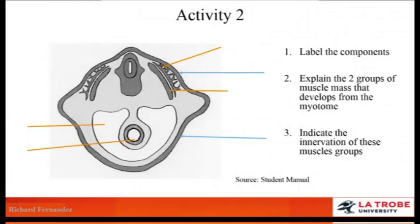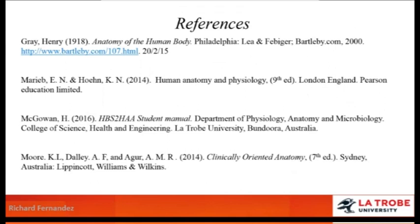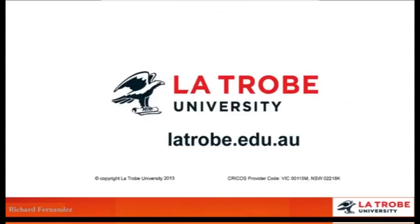It's now time to review your knowledge and apply it in these activities. For Activity 2, label the components and explain the two groups of muscle masses that develop from the myotome, indicating their innervation. For Activity 3, indicate the three functional parts that develop from the somite, draw the two most superficial of those parts, and draw axonal sprouting based on segmental innervation. Post your results on LMS for further discussion. This concludes the second session on the embryology of the limbs and the trunk.